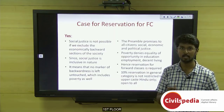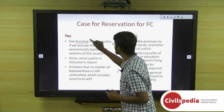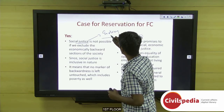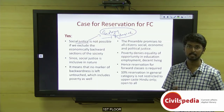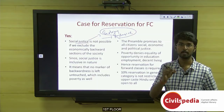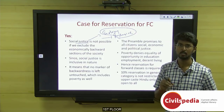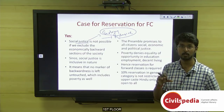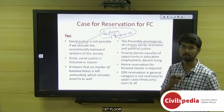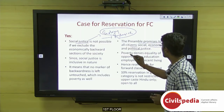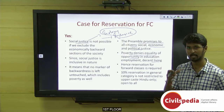The first author, who favors reservation for forward castes, argues on the pretext of social justice. Social justice is an evolving and inclusive concept, and there should be no backwardness in society. Even poverty is a measure of backwardness, so economic criteria of an individual must be considered. The preamble has promised equal social, political, and economic justice to all citizens. Poverty denies equality of opportunity in education, employment, and decent living — hence the author argues reservation for the economically weaker class is necessary.